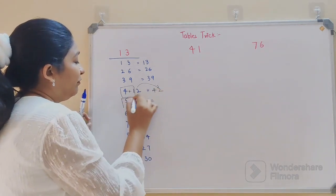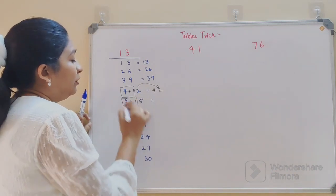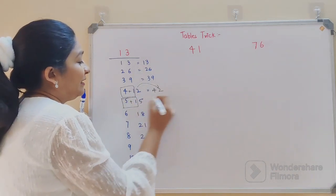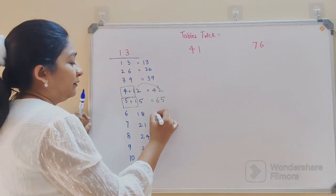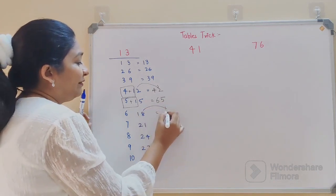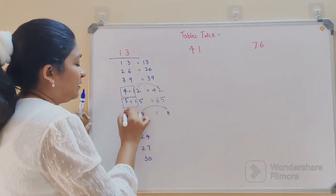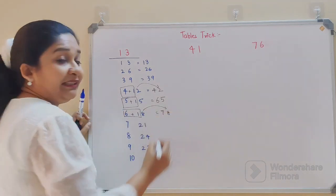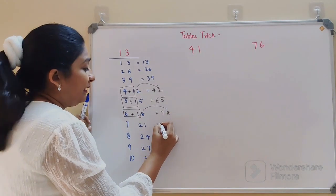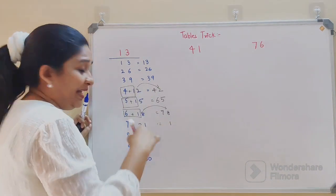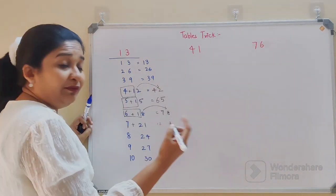Similarly here, 5 and 1 will get added, so 5 plus 1 will get you 6, and this 5 will continue to remain here. Here also your 8 will remain as it is, and then 6 plus 1 gets added, so that gets you 78.